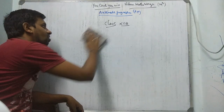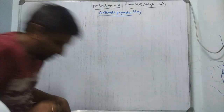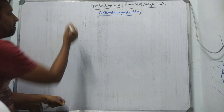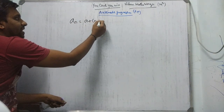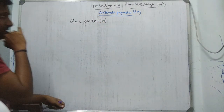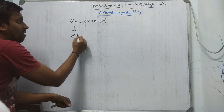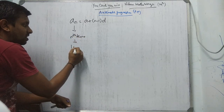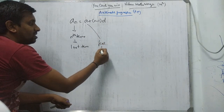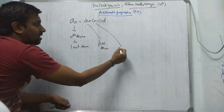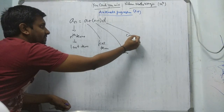Now, what are the formulas involved? The first formula is AN. AN equal to A plus N minus 1 into D. AN is the Nth term or last term. A is the first term. N is the number of terms — total number of terms. D is the common difference.